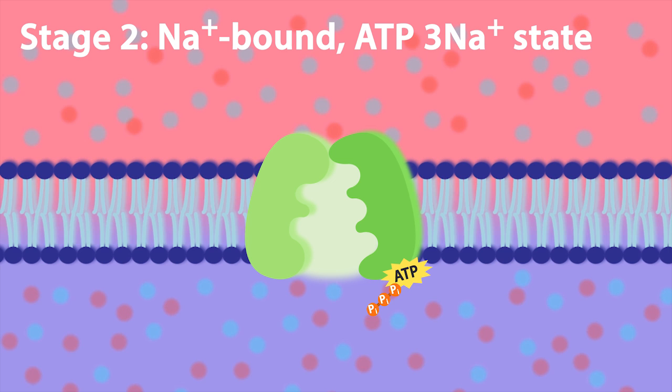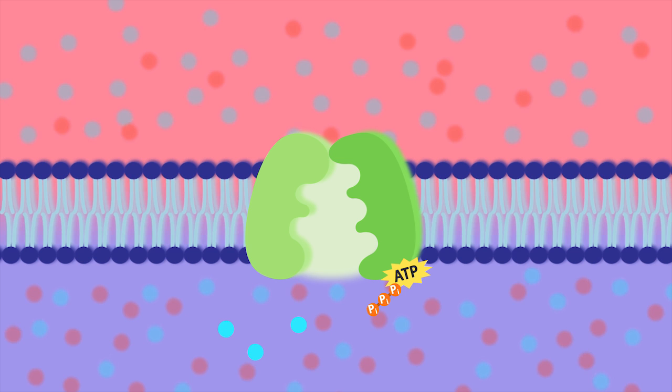Stage two is referred to as the sodium-bound ATP-3 sodium state. During this stage, the intracellular sodium ions enter and bind to their respective binding sites.